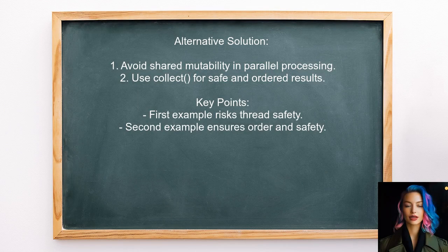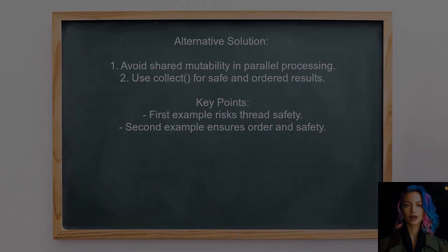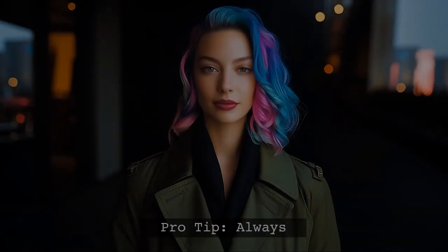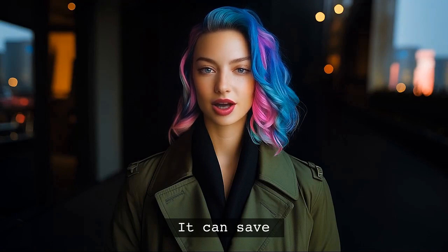Other users point out that the first code example can lead to issues when using parallel processing. If multiple threads try to add elements to the list at the same time, it can cause problems. In contrast, the second example uses the collect method, which safely handles parallel execution by organizing the work and ensuring the final list is built correctly. Here's the pro tip: always prefer immutability when possible. It can save you from a lot of headaches down the road.